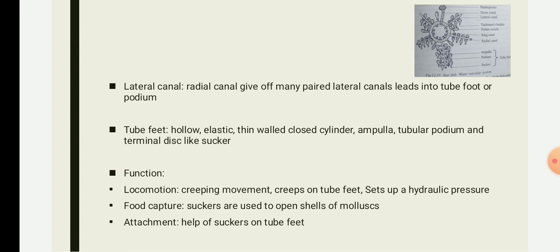For locomotion, the starfish exhibits a creeping movement and grips using the tube feet. They can move at a speed of around 15 centimeters per minute. The water vascular system sets up a hydraulic pressure mechanism which brings about locomotion. During movement, one or two arms are slightly raised from the substratum. The ampulla of the tube foot contracts, then the valves in the lateral canal close, causing water to flow into the podium and increasing the hydraulic pressure within the tube foot.